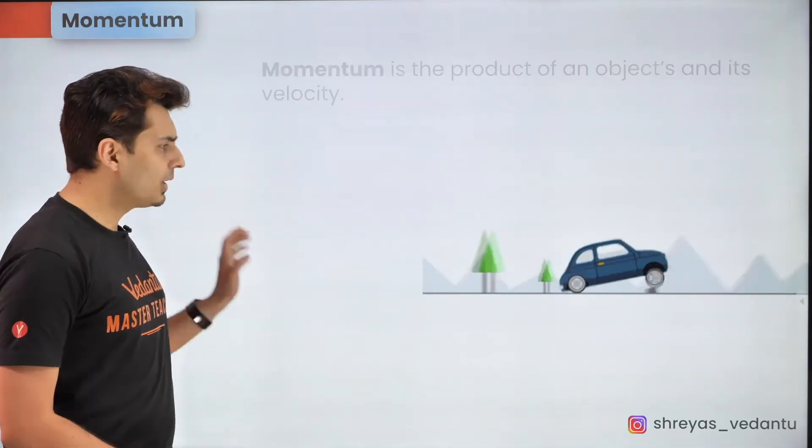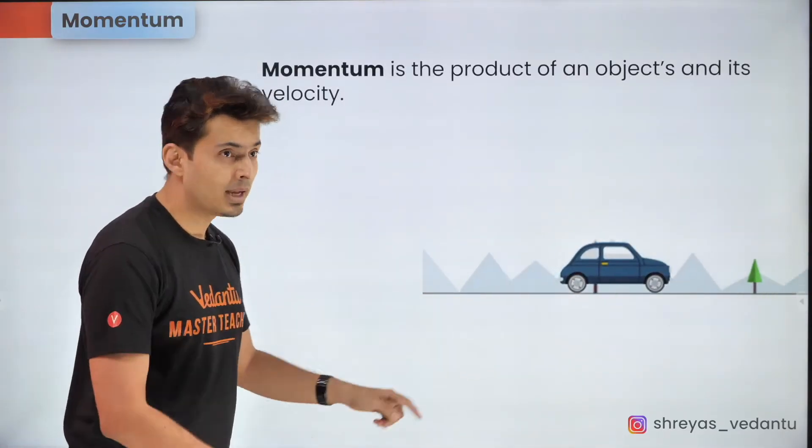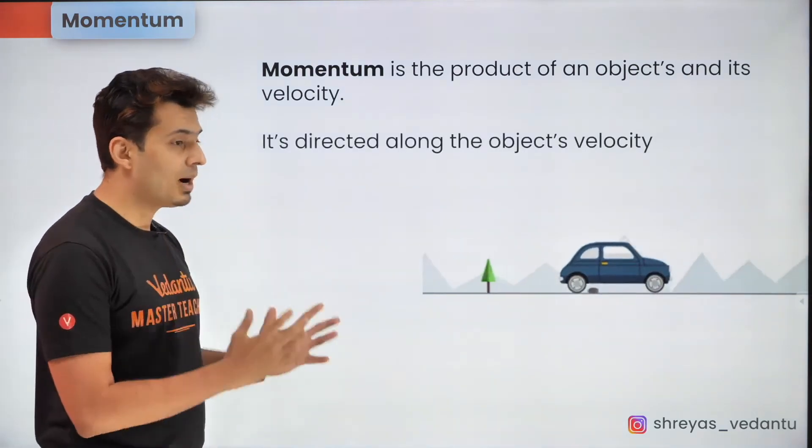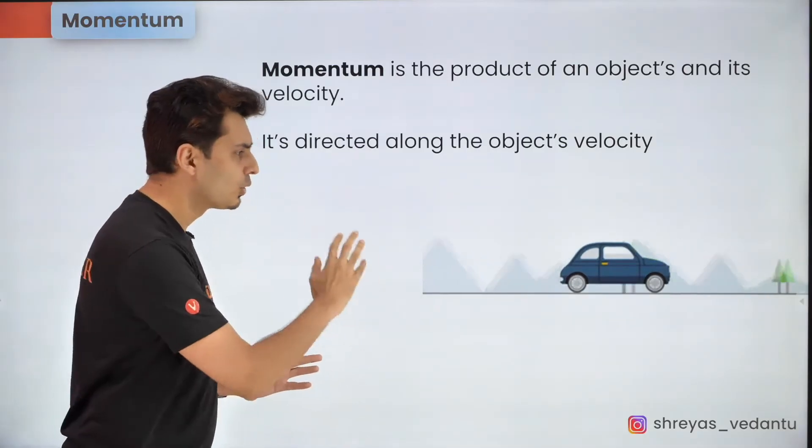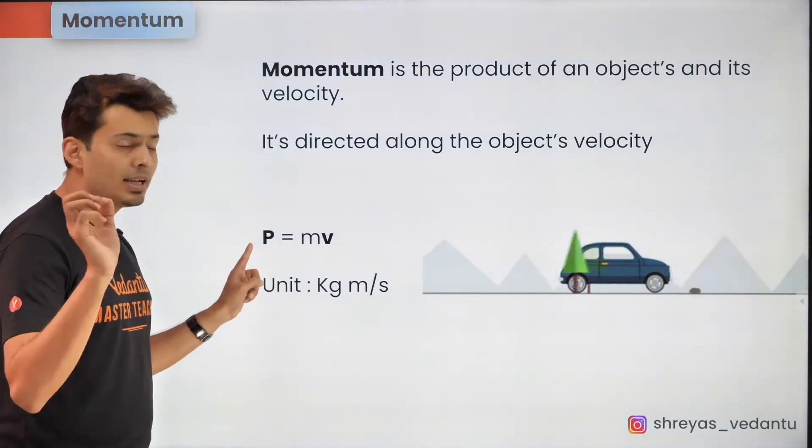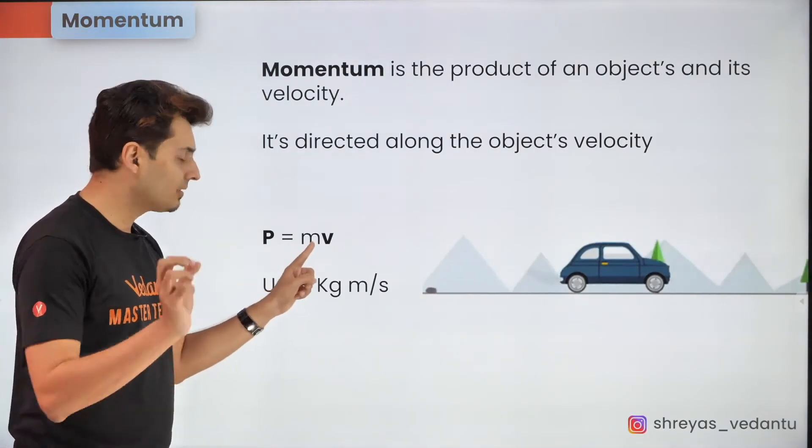Now let's talk about momentum. Any body which moves possesses momentum and it's nothing but the product of the mass and its velocity and it's a vector quantity and the direction is in the direction of the motion of the body. The formula will be P bar is equal to mass times the velocity.